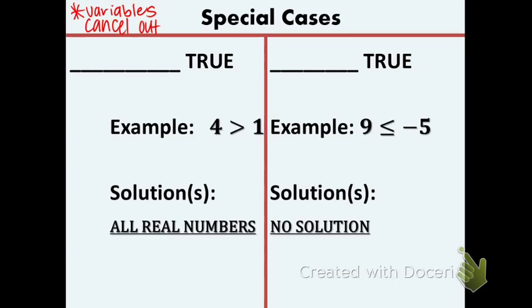Now here's the first case. When you get a statement that is always true, such as 4 is greater than 1 that is always true, your solution is going to be all real numbers. That means that every single number that you plug in for the variable is going to make the inequality work. So that's the first case.